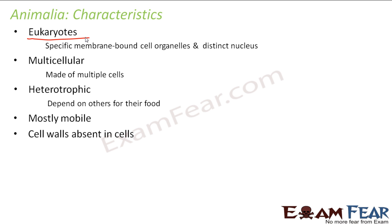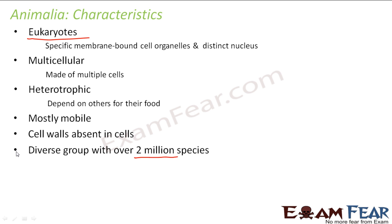Cell walls are absent in their cells, which is unlike the plant kingdom where cell walls were present. It is a diverse group with over 2 million species — just imagine how many varieties of living organisms exist under this kingdom. It is such a large variety that we actually need subclassification of this kingdom.